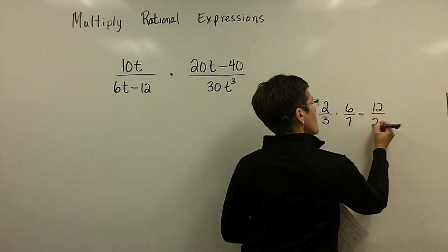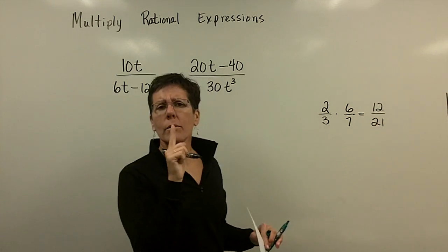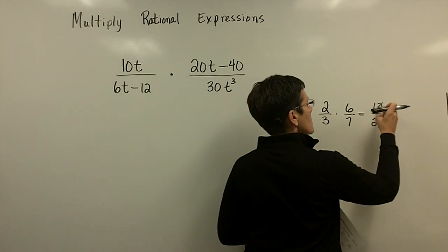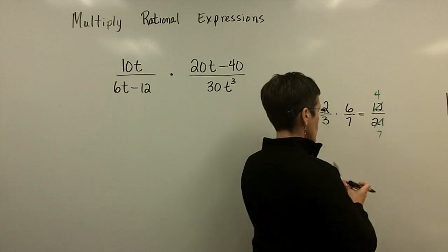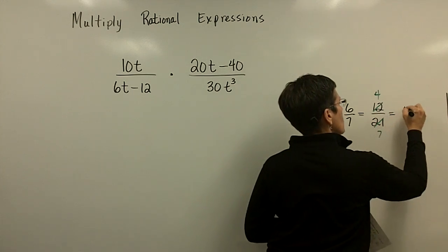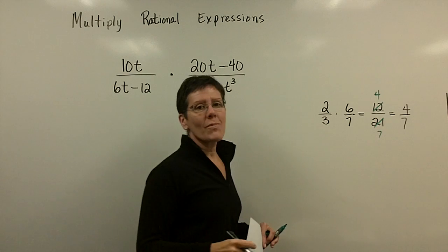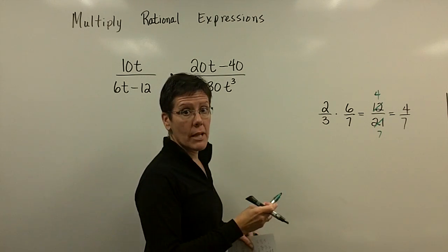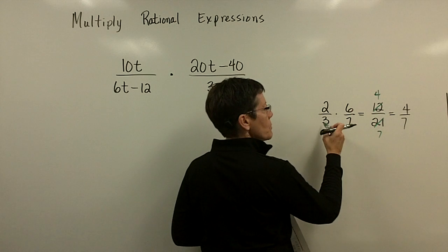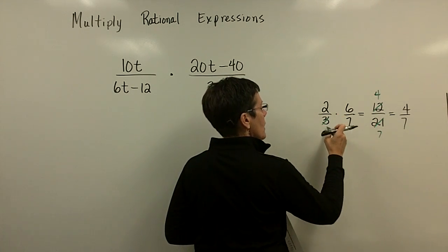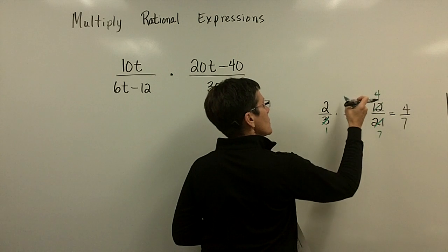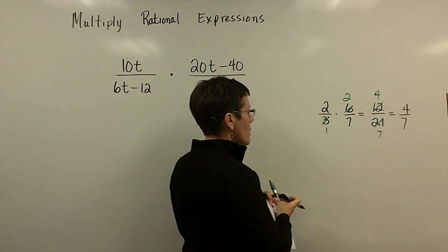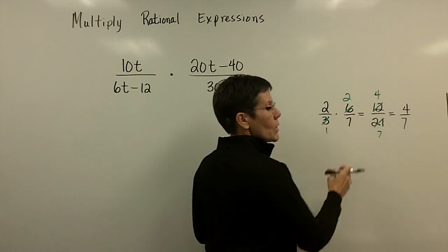Many people call this 12 over 21 and then notice there's a factor of 3 that goes into each of those numbers — 3 goes into here 4 times, and 3 goes into here 7 times, giving an answer of 4/7. My preference is that you catch those common factors beforehand rather than reducing a large fraction. Take the 3 out and the 3 out there, and see that your answer is 4/7.